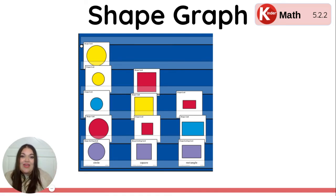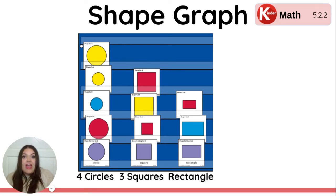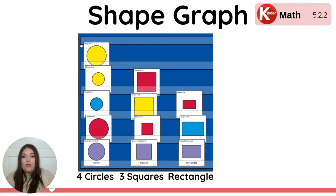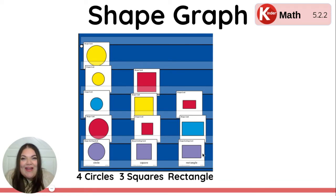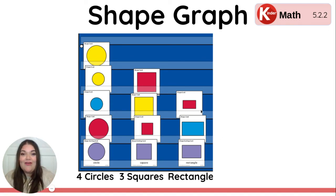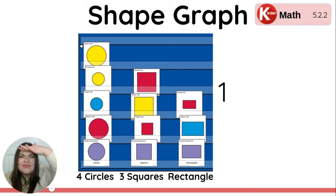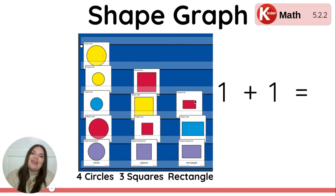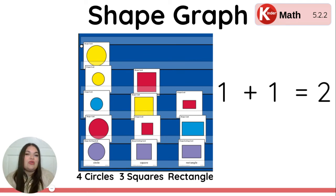Now we're going to jump to the next column and look at our rectangles. So far we have four circles and three squares. Let's count the big rectangles — remember, we're not counting the purple one, that's a label for our graph. How many did you see? One big rectangle right here. Now let's count how many small rectangles we had — just one right here. One plus one equals two. We have two rectangles in our graph.